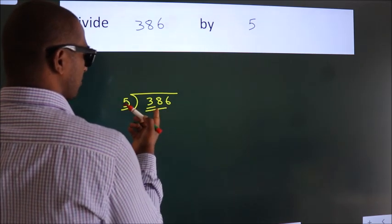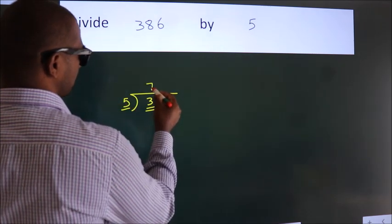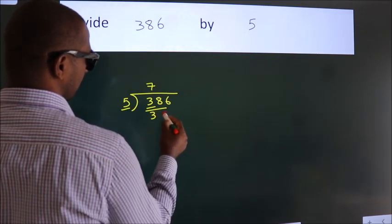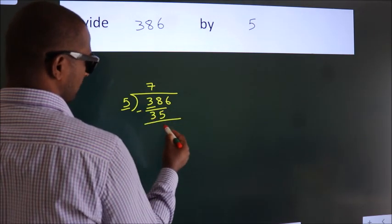A number close to 38 in the 5 table is 5 times 7 equals 35. Now, we should subtract. We get 3.